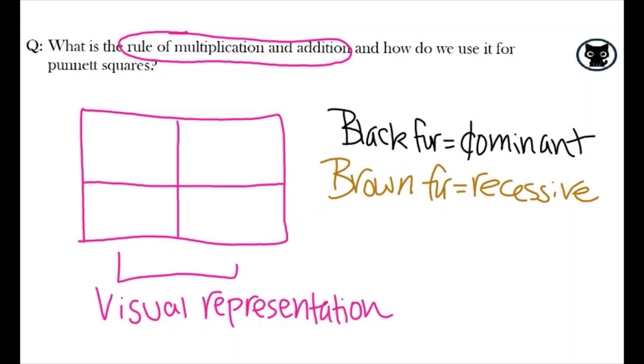For example, let's say we have two dogs that have different fur colors, black or brown, with black fur being a dominant trait and brown being recessive. If we have a homozygous recessive dog, then it will have the alleles lowercase b, lowercase b to showcase that it will have brown fur.